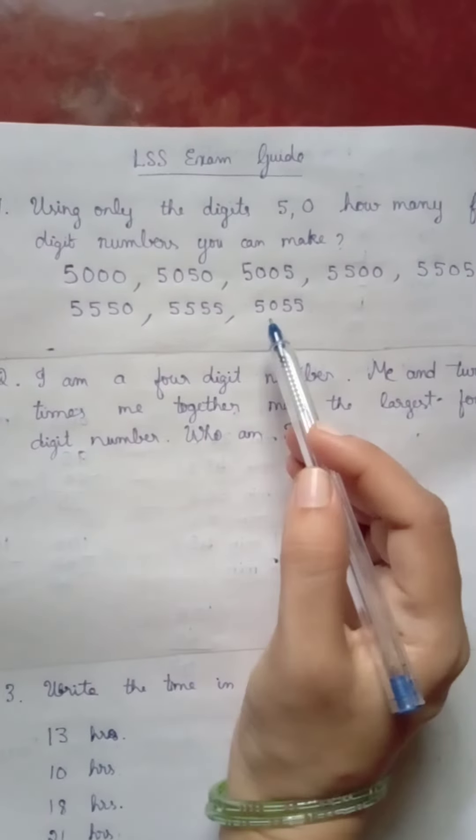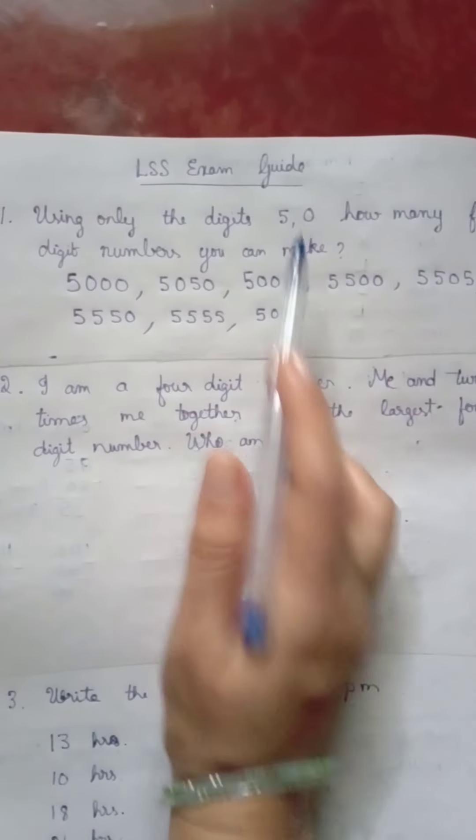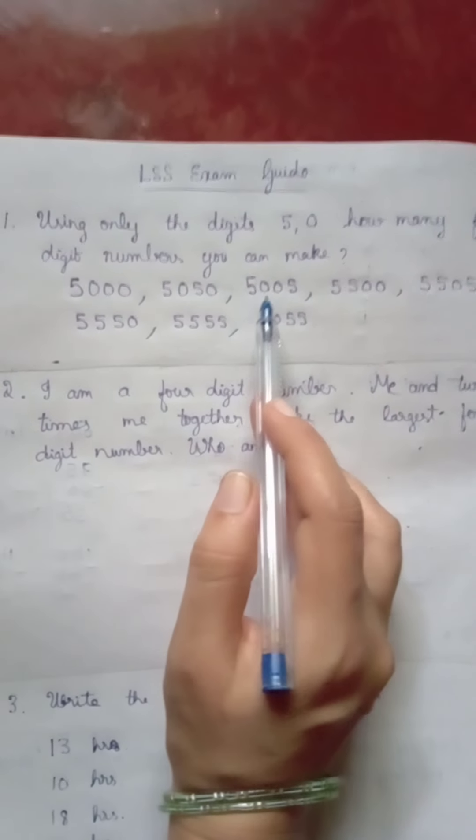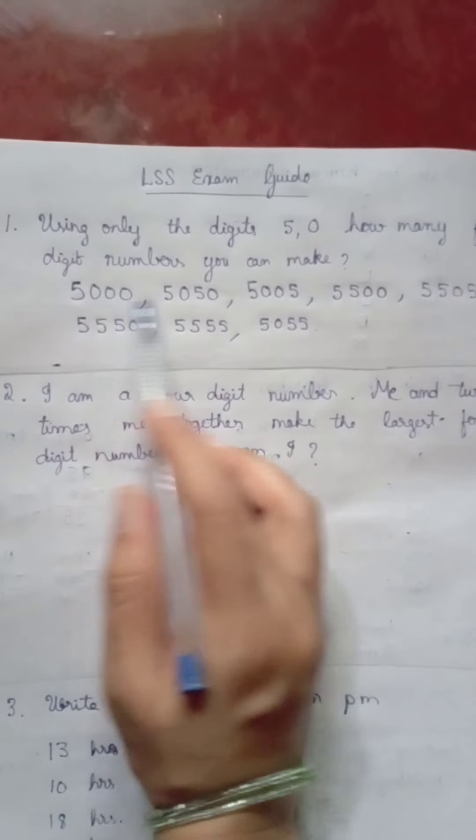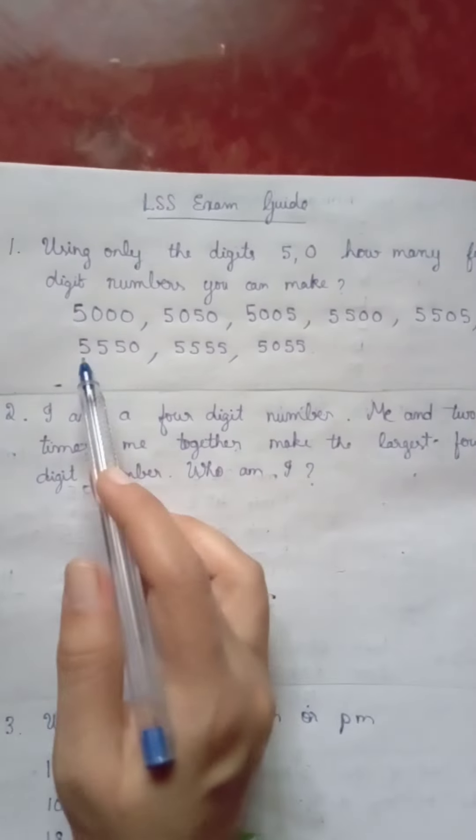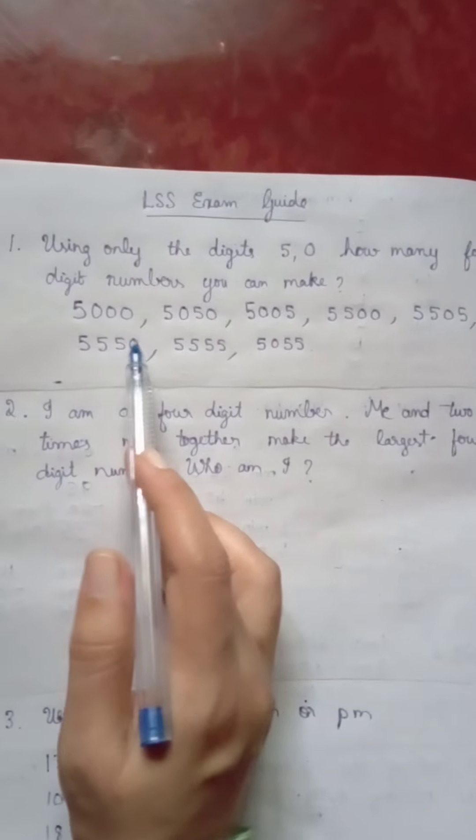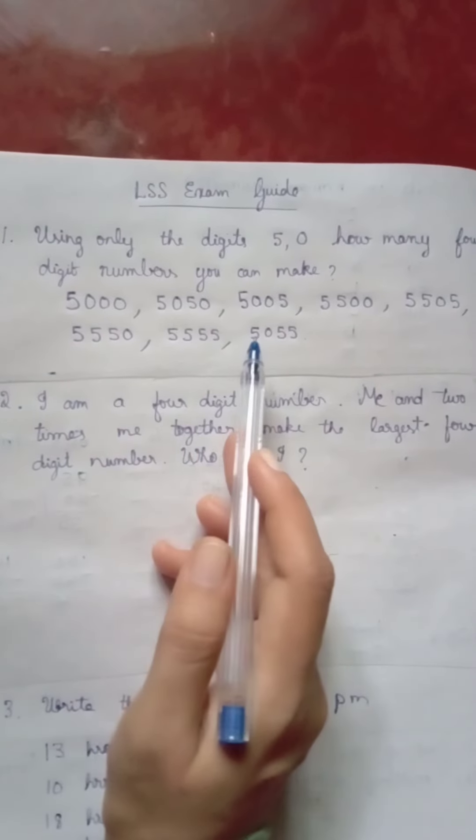Please note, don't take zero in the thousands place, otherwise you get a three digit number. Taking 5 in thousands place, write all possible combinations of zero and 5.